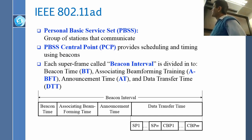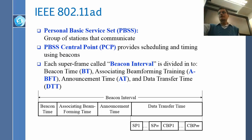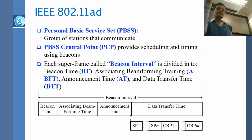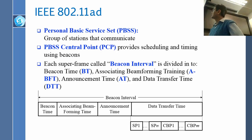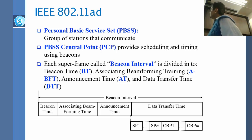Then there is associative beam forming time. This is the time where you find out who is where and in what direction. If I want to talk to someone, I have to do some antenna adjustments. All of that happens during the associative beam forming time. Then there is announcement time for common announcements — mostly multicast — and then data transfer time.